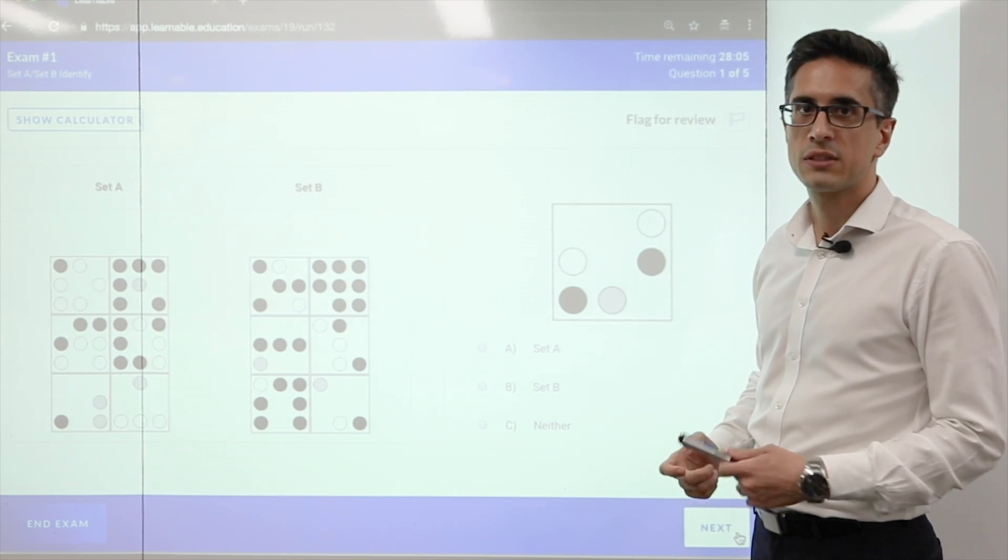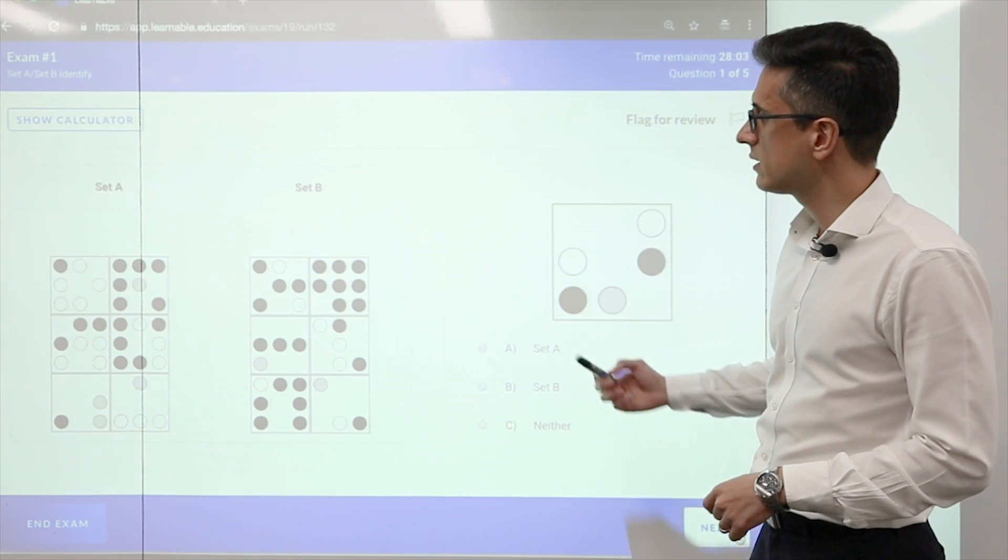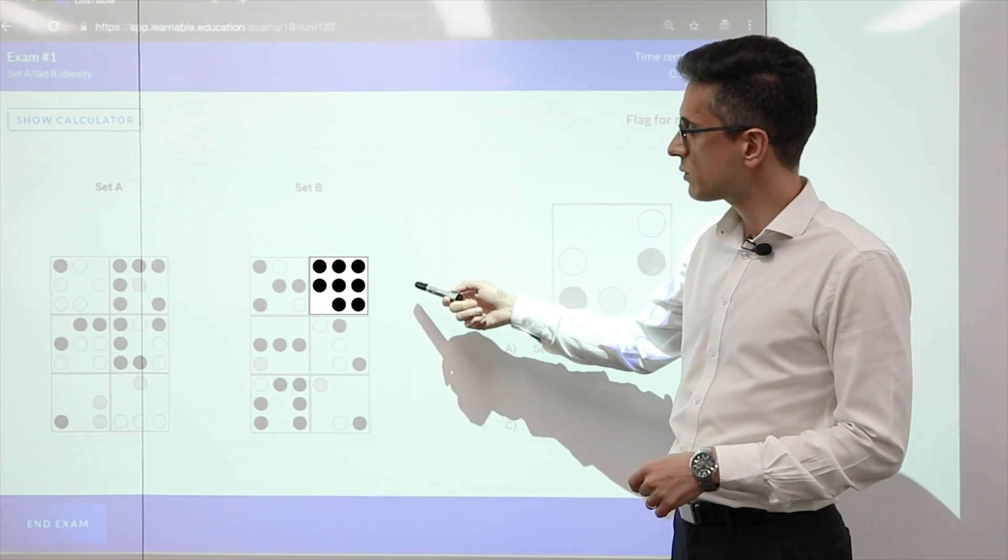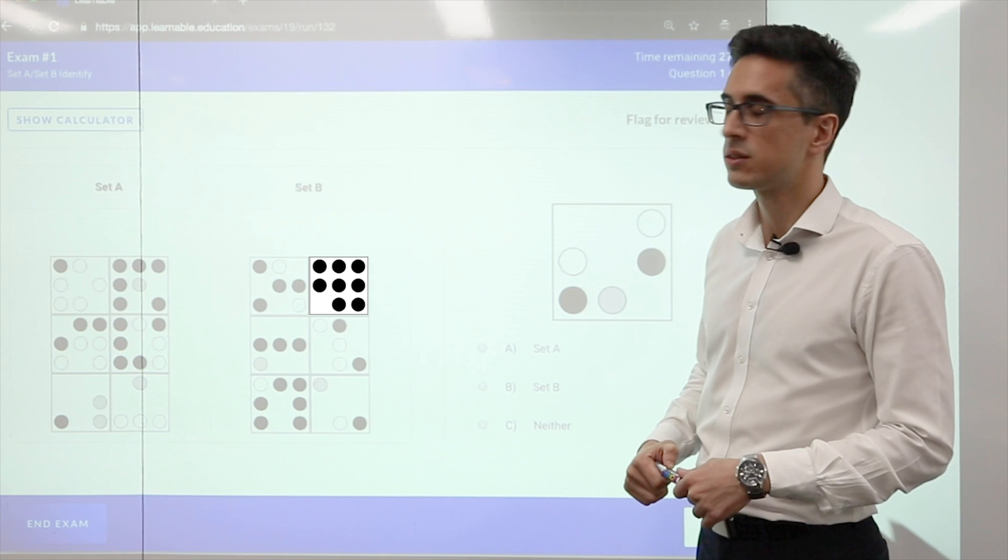As with all set A, set B questions, we'll start by looking at the simplest square. In this case, it's the top right-hand square of set B. This is the simplest square because it contains only one type of shape, it only contains black circles.